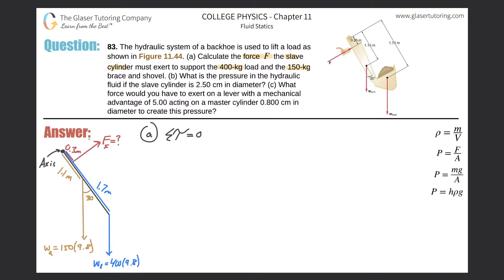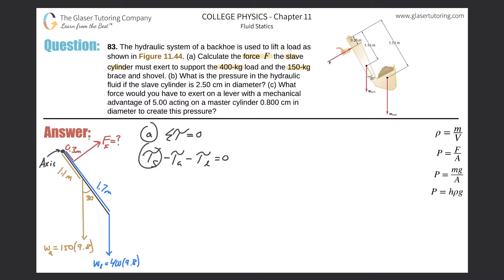Counterclockwise torques are positive; forces producing clockwise rotations are negative. The slave cylinder force would cause the lever arm to rotate counterclockwise, so its torque is positive. The arm weight and load weight would both rotate it clockwise, so they're negative. The equation becomes: torque of slave cylinder minus torque of arm minus torque of load equals zero.